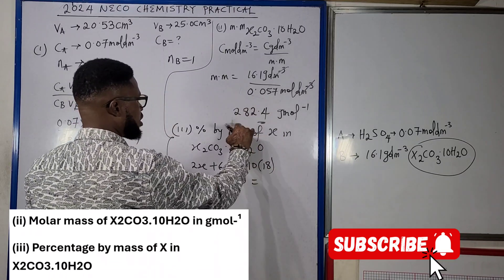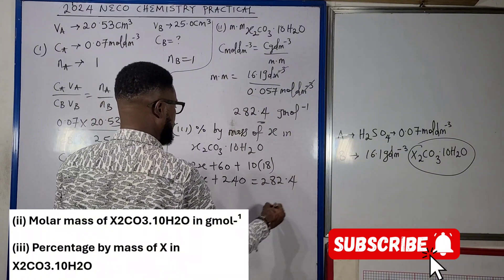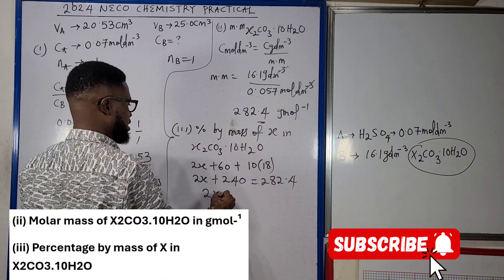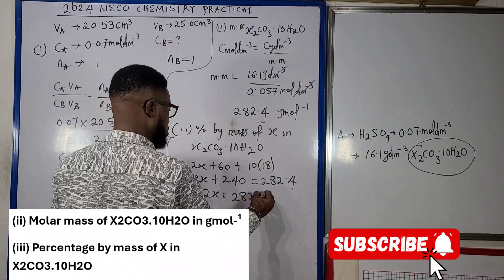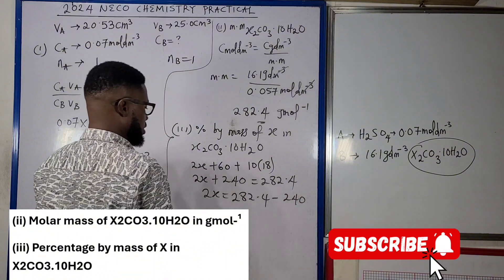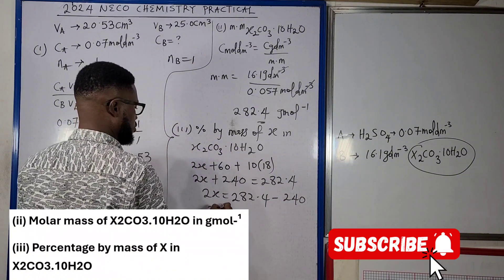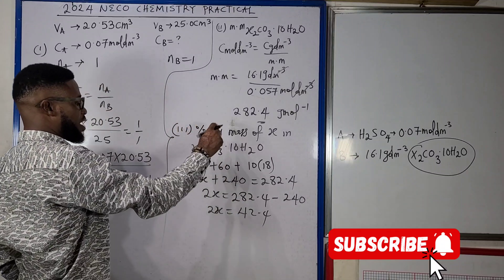If we calculate, 12 plus 48 is 60, plus 10H2O is 180. That would mean 2X plus 240 equals to the total molar mass. The molar mass is 282.4, so 2X equals 282.4 minus 240. And 2X therefore will be 42.4.